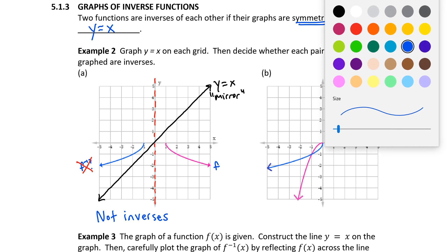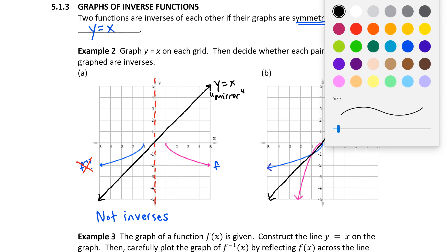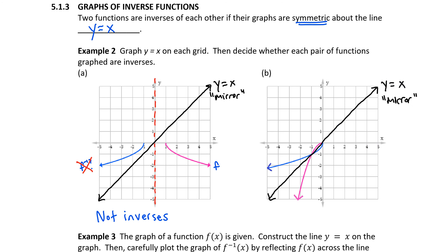On example B, if we construct our line y equals x — again going right through the center of the coordinate plane — that's our identity line. We treat it like a mirror. Notice in this case that the pink line and the blue line are perfect reflections of each other across the line y equals x. Therefore, if this is f, then this is definitely f inverse. These are inverses.